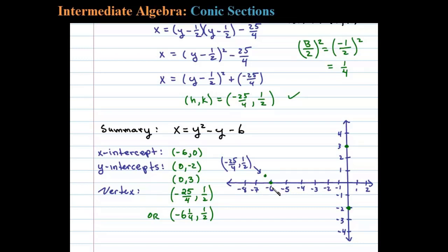And then finally we can see that there'll be a point of symmetry here at negative 6 comma 1. Okay, so now we're ready to sketch this sideways parabola. And so here we have a rough sketch of x equals y squared minus y minus 6.